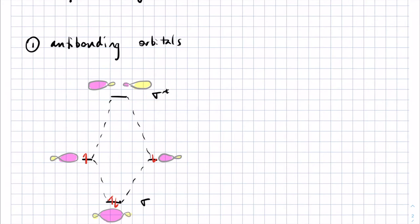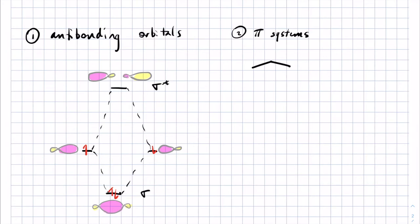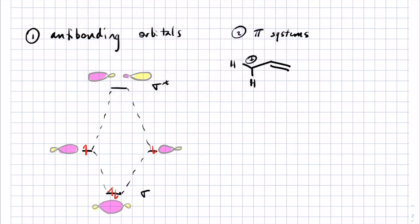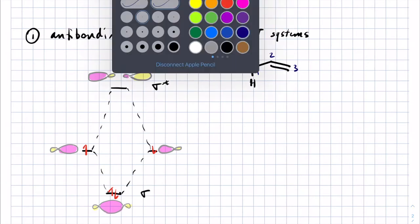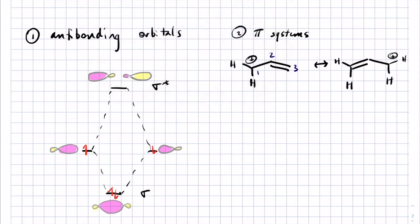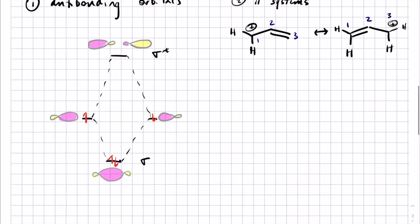Another place where bringing in MO concepts is useful is in conjugated pi systems. The classic example is the allyl anion, cation, or radical — let's choose the allyl cation, carbon atoms one, two, and three. Resonance tells you that the double bond can be between carbons one and two or between two and three, but that the positive charge is only ever on atoms one and three.